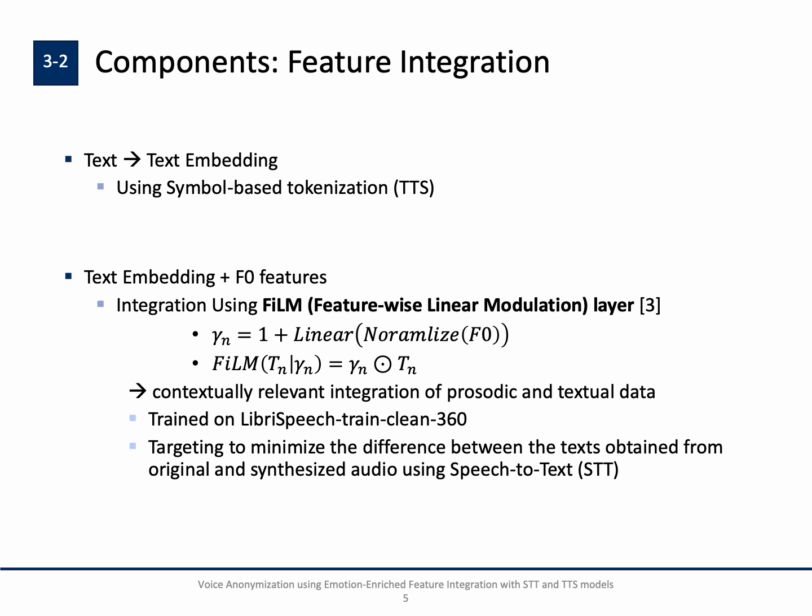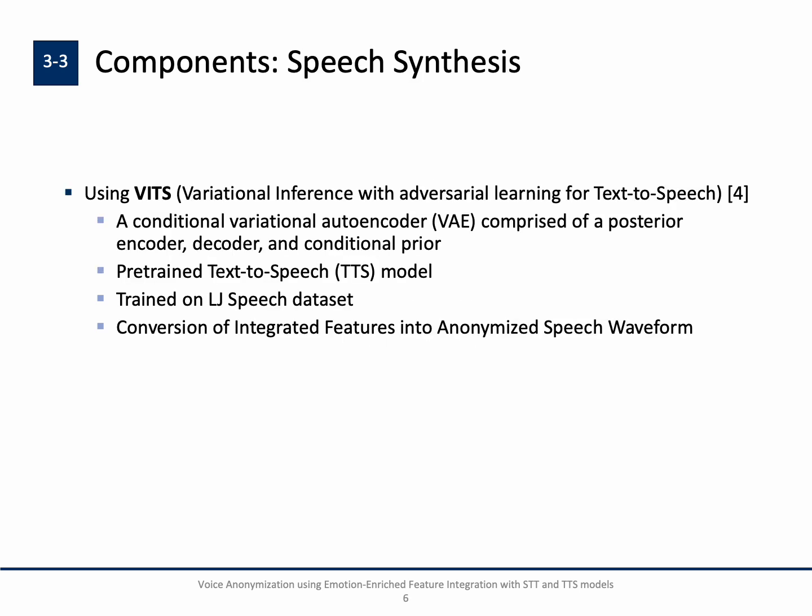We train the FiLM layer using the LibriSpeech TrainClean360 dataset, targeting to minimize the difference between the texts obtained from the original and synthesized audio samples using the STT model. With this modulation, the FiLM layer enhances the flexibility of the model. The final stage of our anonymization pipeline involves synthesizing the speech waveform from the integrated features. We utilize the VITS model for this purpose, employing a pre-trained VITS model trained on the LJSpeech dataset.